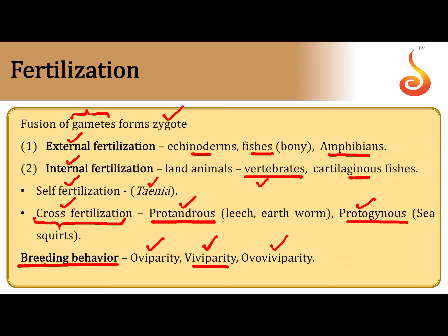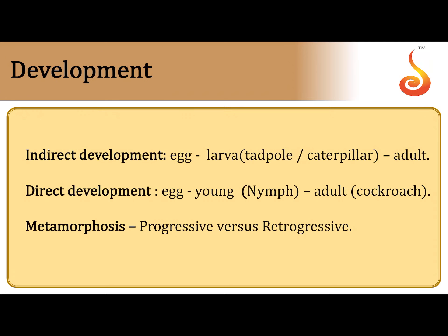Ovo-viviparity is a mix of both, seen in some snakes such as vipers. The mother does produce an egg, but the egg is retained within the mother's body. The egg hatches inside the mother's body and the young one crawls out. It appears as if the young one is taking birth, but actually it came from the hatching of an egg retained within the mother's reproductive tract. So it appears viviparous but in reality it is ovo-viviparous.